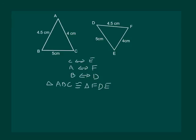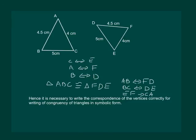And this also implies that side AB of triangle ABC corresponds to side FD of triangle FDE. Then BC corresponds to DE and CA corresponds to EF. Hence it is necessary to write the correspondence of vertices correctly for writing of congruency of triangles in symbolic form.